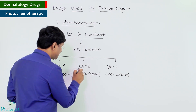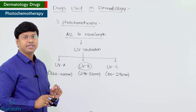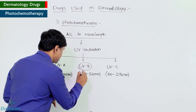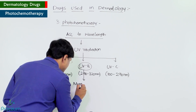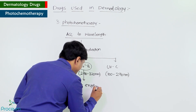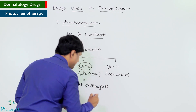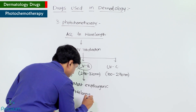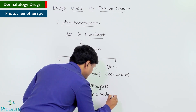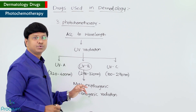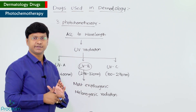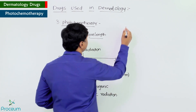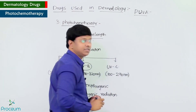An important multiple choice question point: UVB is the most erythrogenic and melanogenic radiation. Erythrogenic means it can cause reddening of the skin, and melanogenic means it will also stimulate the melanocytes. So remember, UVB is the most erythrogenic as well as melanogenic radiation.